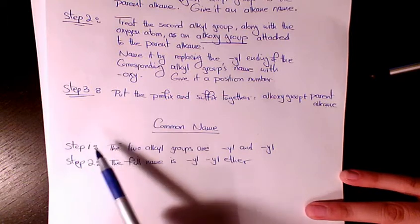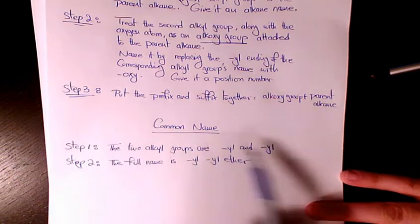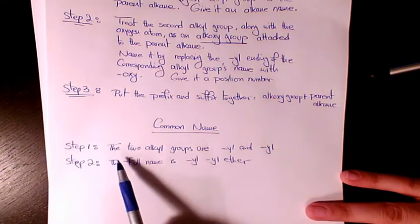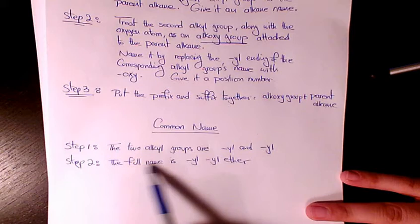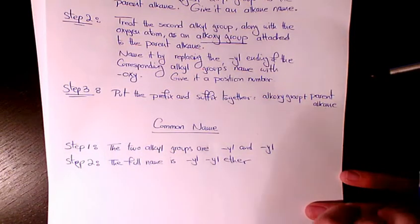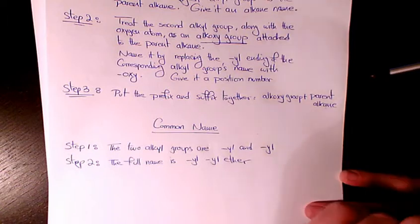In the common name method, we have two steps. Step one is to name the two alkyl groups. In step two, we complete it by putting 'ether' at the end. For example, methyl ethyl ether.